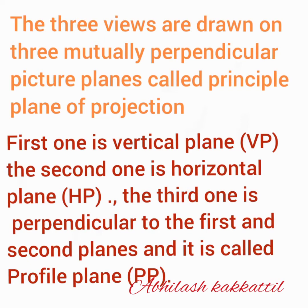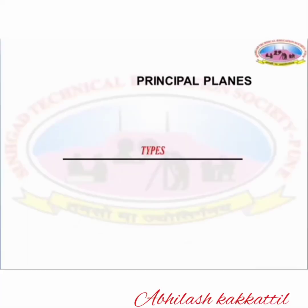The first plane is the vertical plane, VP. The second one is the horizontal plane, HP. The third one is perpendicular to the first and second planes and is called the profile plane, PP. These three views are drawn on three mutually perpendicular picture planes called the principle planes of projection.